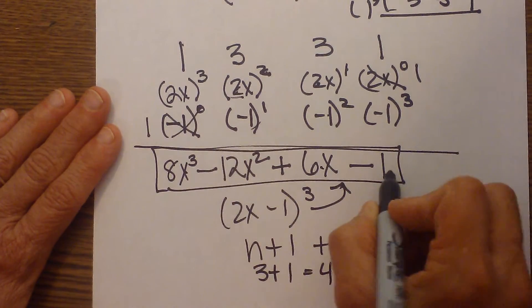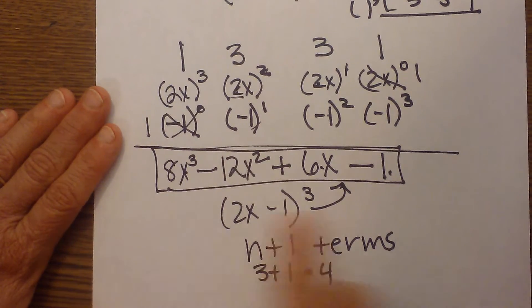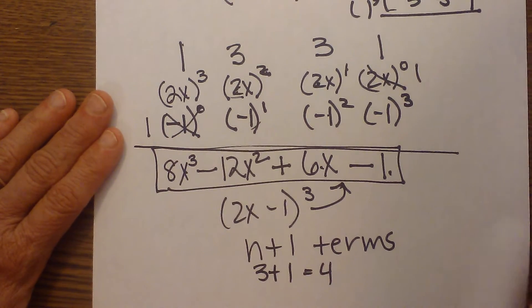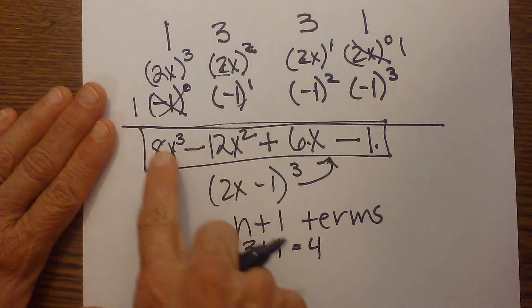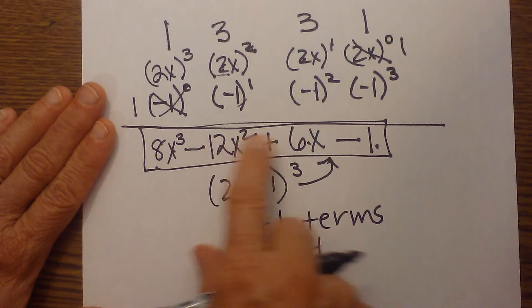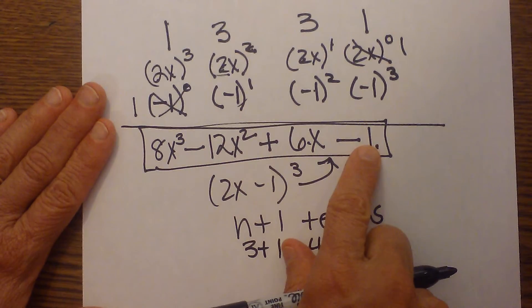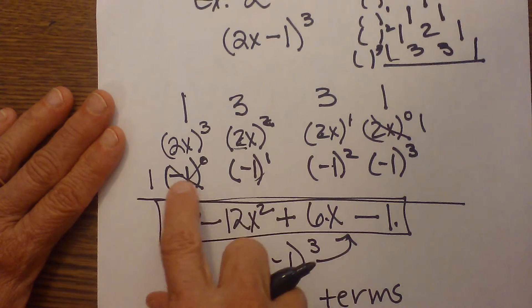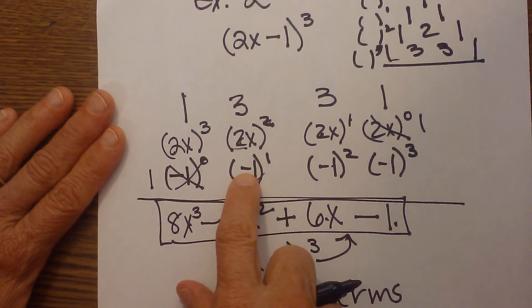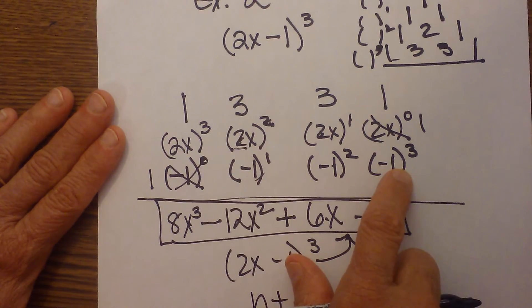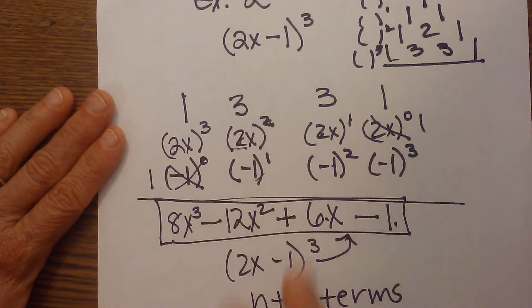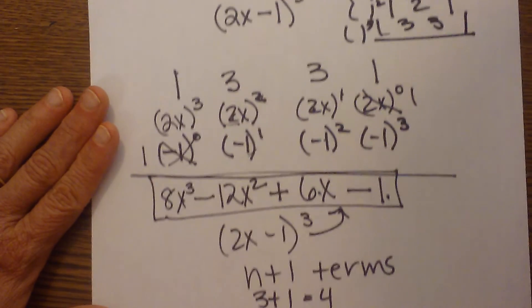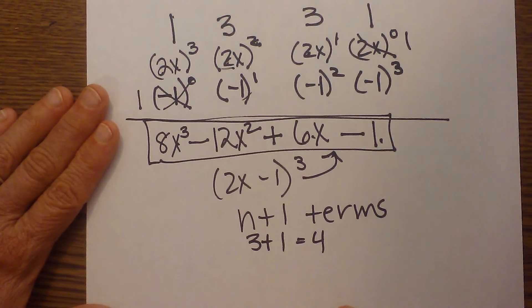The other pattern I want you to begin to notice is when we're expanding a binomial with subtraction, every other term will be negative. So you have positive, negative, positive, negative, because you're raising that second term to odd exponents on the second term and the fourth term. They're going to be raised to odd exponents, therefore the terms are going to be negative. So there's a couple helpful hints to help you out. So there you go, there's your second example of expanding using binomial theorem.